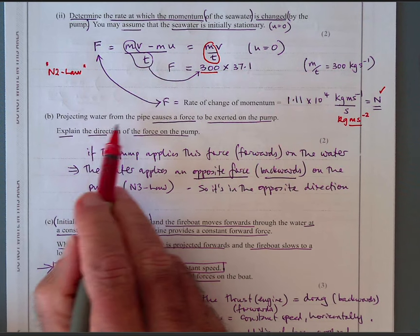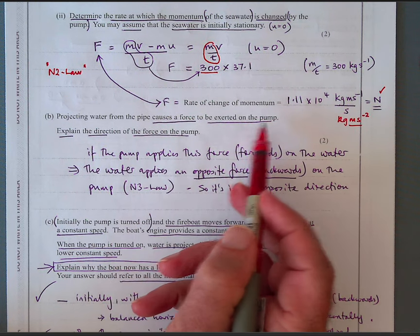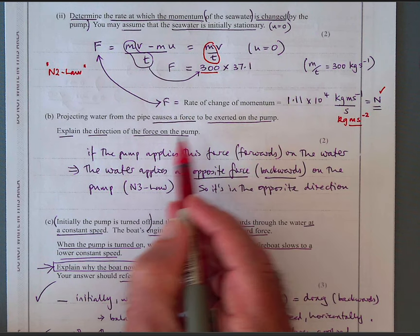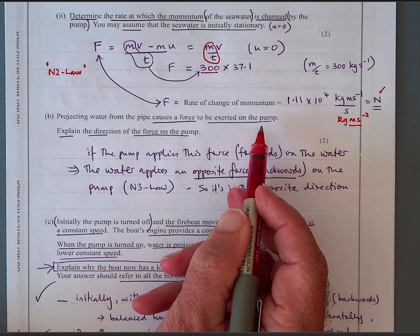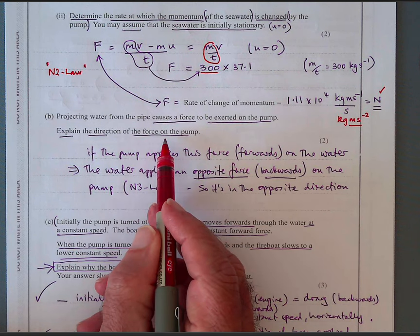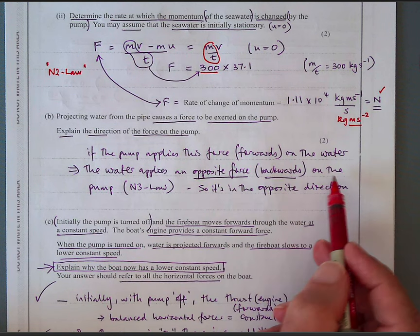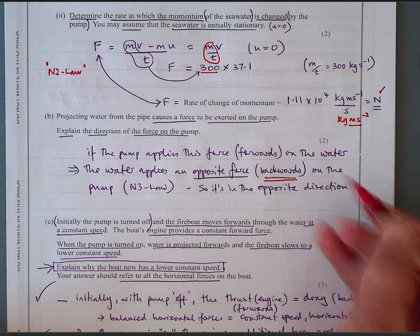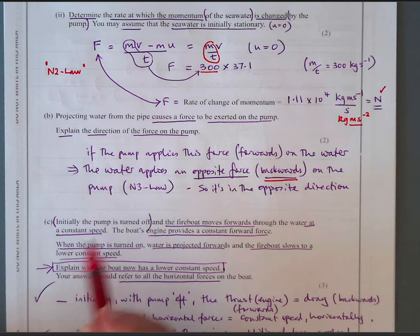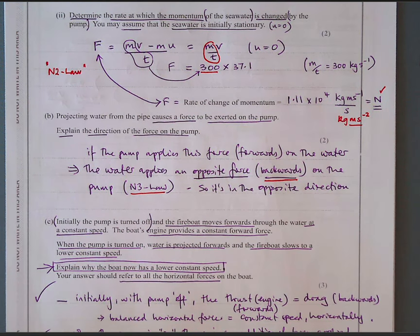Part B: projecting water from the pipe causes a force on the pump. The pump pushes water forwards, so by Newton's third law the water pushes the pump backwards in the opposite direction. The key answer here is Newton's third law — the force on the pump is in the opposite direction to the force on the water.